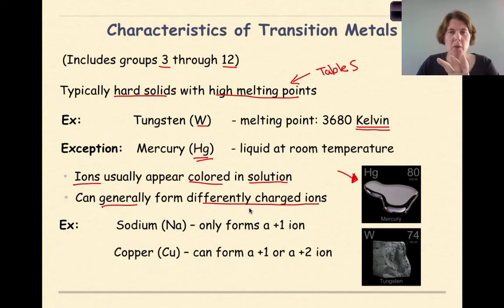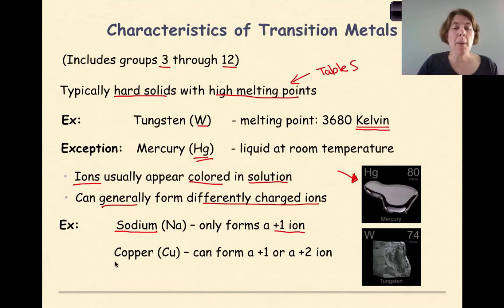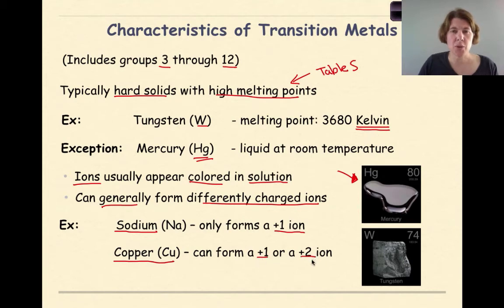Transition metals can generally form different charged ions. For example, sodium in group 1 can only form a plus 1 ion, whereas copper — a transition metal — can form either a plus 1 or a plus 2 ion.